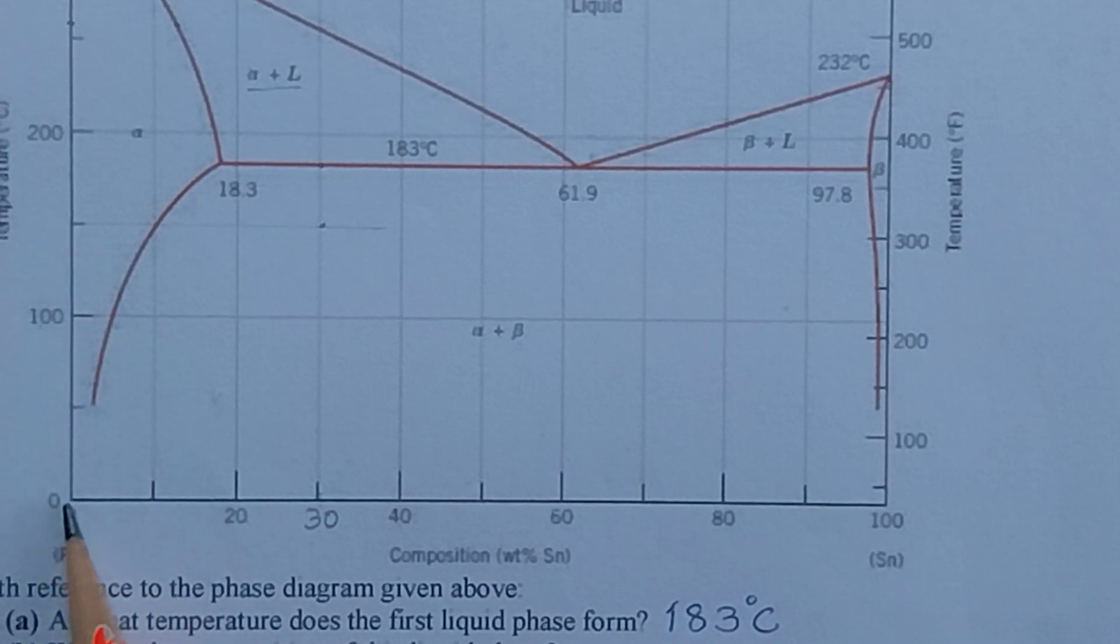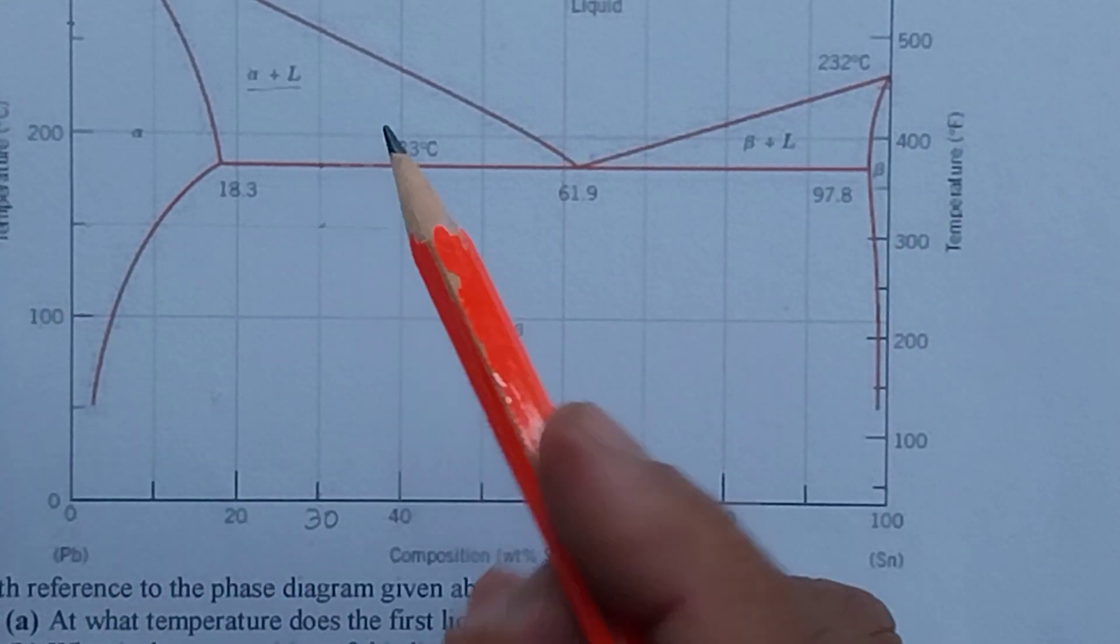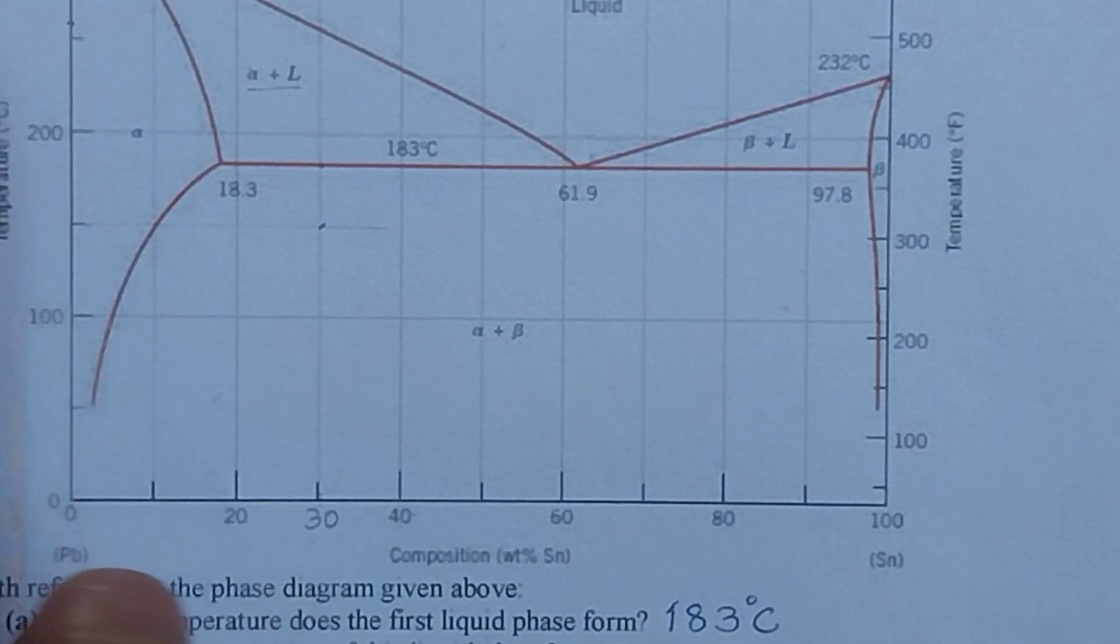The temperature has been given at 150 degrees Celsius. So at 150, this is 0, 150, actually 200. So from 150 we draw a line and this is the starting point of the alloy.